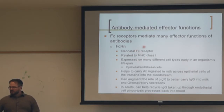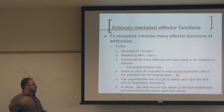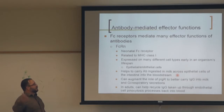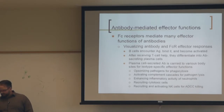The neonatal FC receptor (FcRn) is related to MHC class I and is expressed throughout the lifespan on epithelial and endothelial cells. It carries antibodies ingested in milk across epithelial cells, which is critical early in life when infants haven't yet built immune memory. FcRn moves maternal antibodies from breast milk across epithelial cells into the infant's bloodstream.